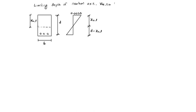This is the strain diagram. Here the maximum allowable strain in steel at the time of yielding is equal to 0.002 plus 0.87 FY by ES.